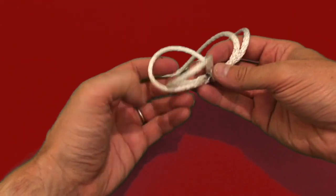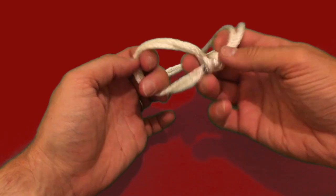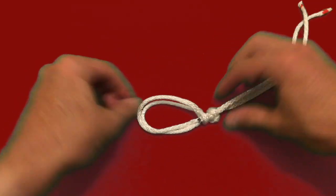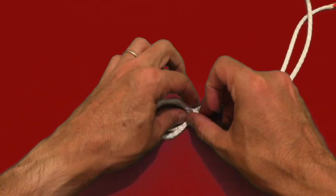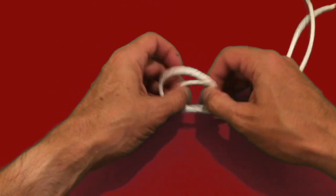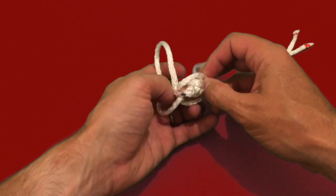The stronger soft shackle, having two loops, effectively doubles the strength of the line and creates a stronger shackle than the traditional single-threaded soft shackle.